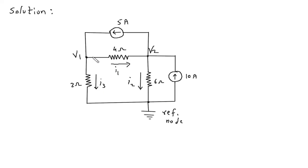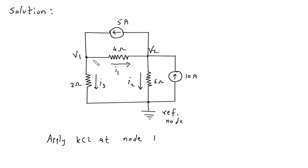Now we will apply KCL at node V1. Summation of current entering a node is equal to summation of current leaving a node. So 5 is entering, which equals the leaving currents I1 and I3. So 5 = I1 + I3.